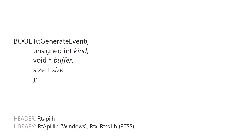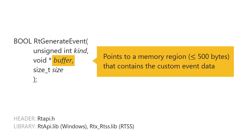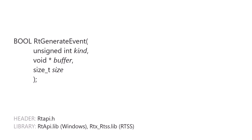Custom events are user-defined events generated by real-time API rtGenerateEvent. Each custom event has a unique user-selected identifier between 0 and 999 inclusive, specified by the API's kind parameter. The buffer parameter points to a memory region containing up to 500 bytes of custom event data. When creating a custom event, you choose the ID value and data that is meaningful to you.